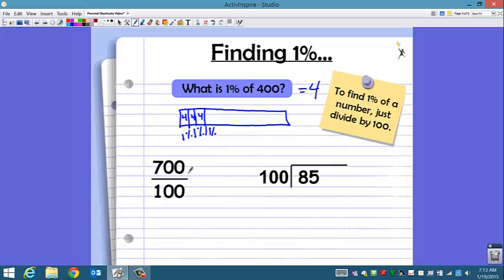Let's try 1% of 700. Divide it by 100. This time, they both end in two zeros, so I cross out two zeros, and I get 7. So 1% of 700 is 7.